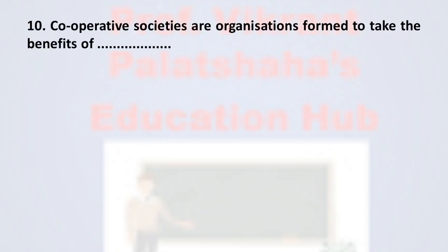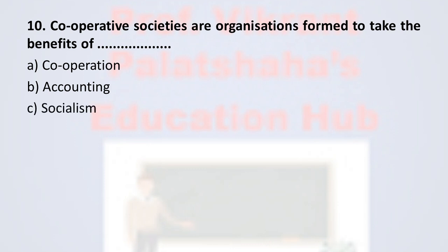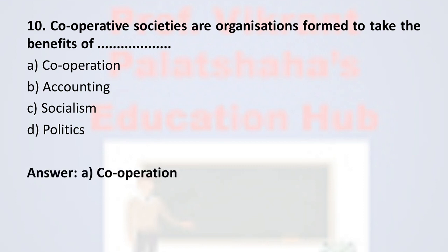Question number 10: Cooperative societies are organizations formed to take the benefits of ___. Option A: cooperation. Option B: accounting. Option C: socialism. Option D: politics. The correct option is option A, cooperation. Cooperative societies are organizations formed to take the benefits of cooperation. Therefore, the correct option is option A.